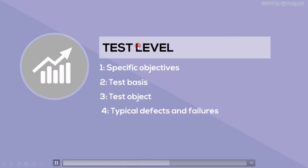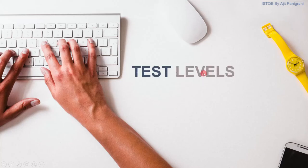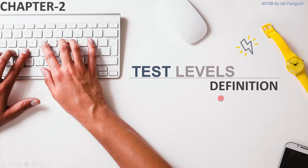For each test level — for example component level — we need to see what is the objective of component testing, similarly for integration testing. Then what are the requirements needed for that level, what type of test object we get for testing, what type of defects or failures we find, and finally the approaches and who is responsible for these levels.